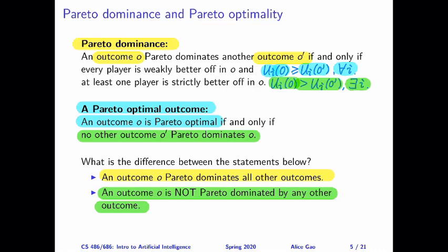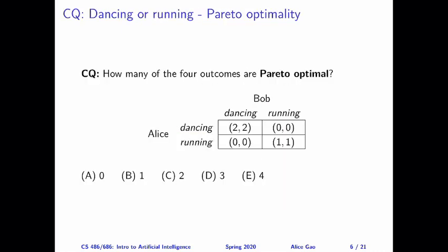Let's now practice this concept on the dancing or running game. Given this game, how many of the four outcomes are Pareto optimal? This question may already sound weird because you might have thought Pareto optimal defines the single best outcome — so why could there be multiple? It turns out a game can have multiple Pareto optimal outcomes. Apply the definition carefully and think about this yourself before watching for the answer.